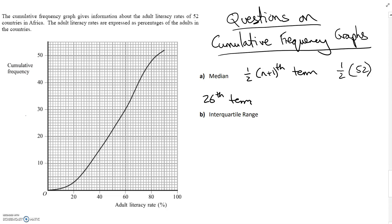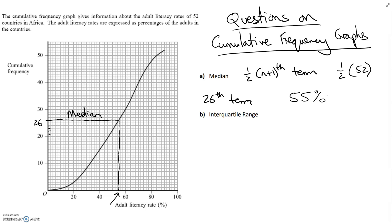Because this is a cumulative frequency, all values are added together and already in ascending order from 0 to 50. To find the median I want the 26th item. I find the 26th thing on the cumulative frequency axis, draw a line across to meet the graph, then draw a line down. This value read off the bottom axis is the median — it looks like 55. So the median is the 26th term, and the actual value is 55 percent adult literacy.